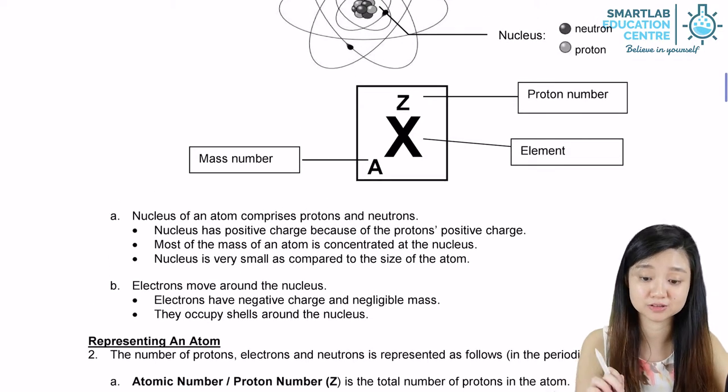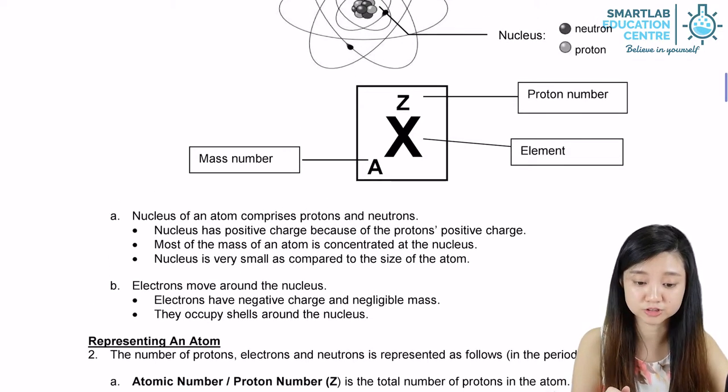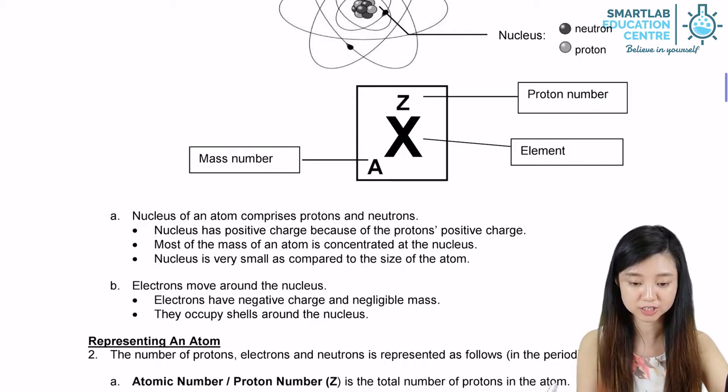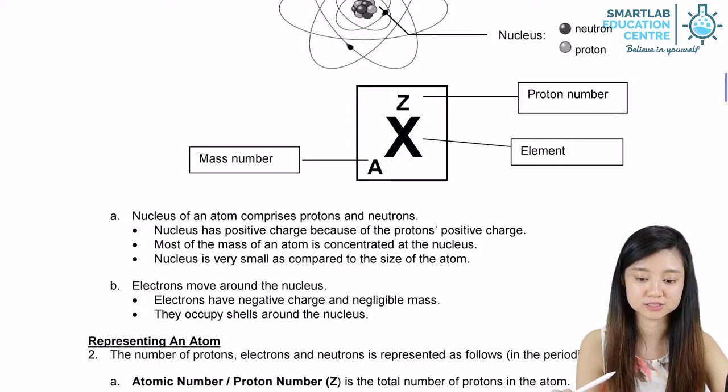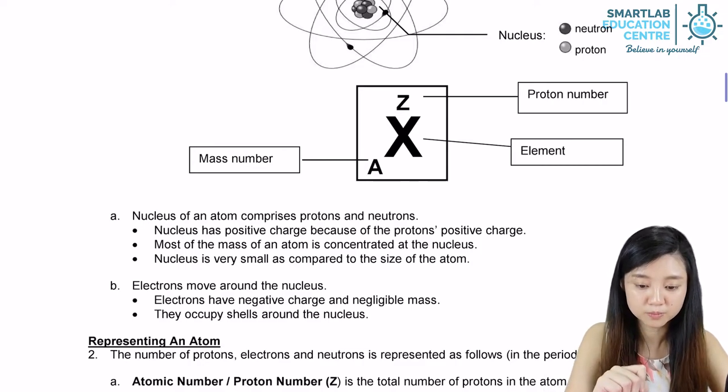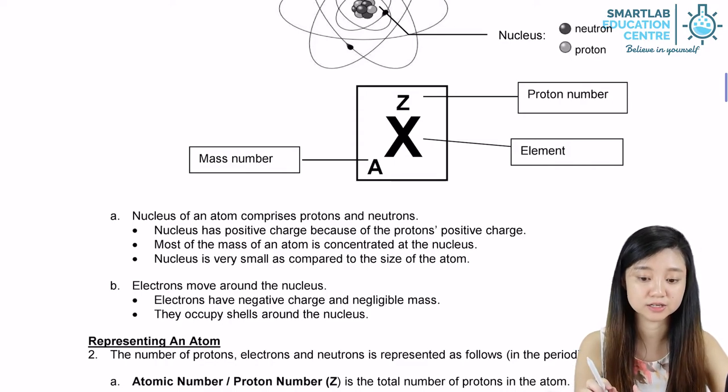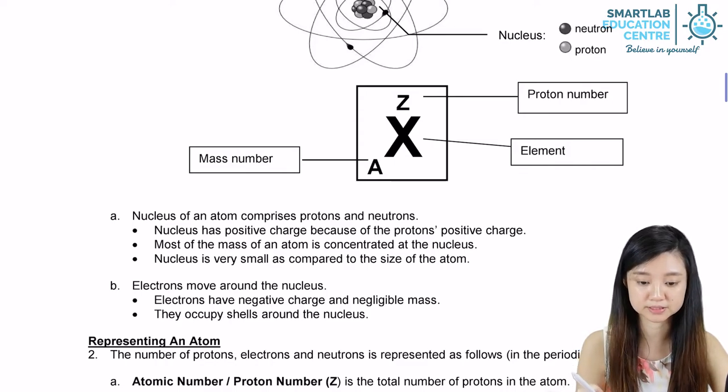The nucleus of an atom consists of protons and neutrons, and the nucleus will thus have a positive charge because of the proton's positive charge. Since neutrons don't have a charge, that's why the whole nucleus has a positive charge. Most of the mass of the atom is concentrated at the nucleus because protons and neutrons have atomic mass.